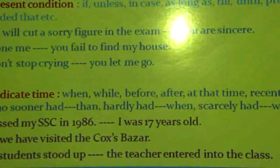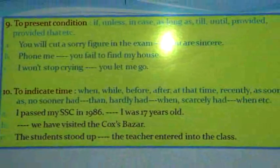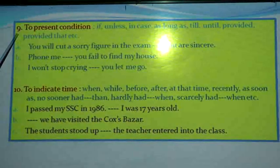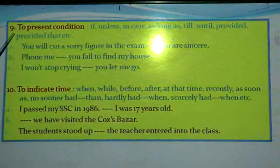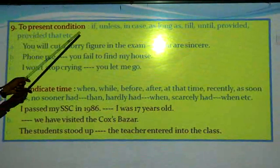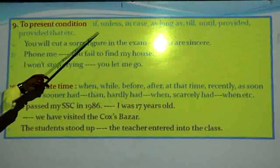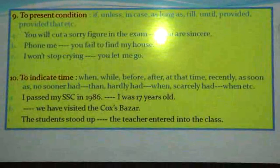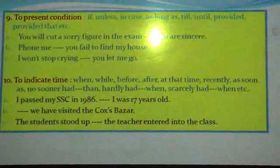We know sentence connectors are used to connect different parts of the sentence. Let us see number nine: to present condition. In order to present the conditional sentence, we have to use this type of sentence connector like: if, unless, in case, as long as, till, until, provided, provided that. These are the sentence connectors used in a conditional sentence.